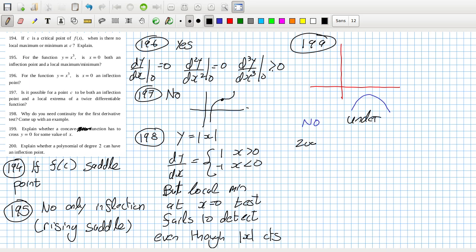200, explain whether a polynomial degree two can have an inflection point. Can it? No, because the second derivative would equal a constant which is never zero. Because if it was zero, then it wouldn't be a degree two polynomial, it'd be a linear.